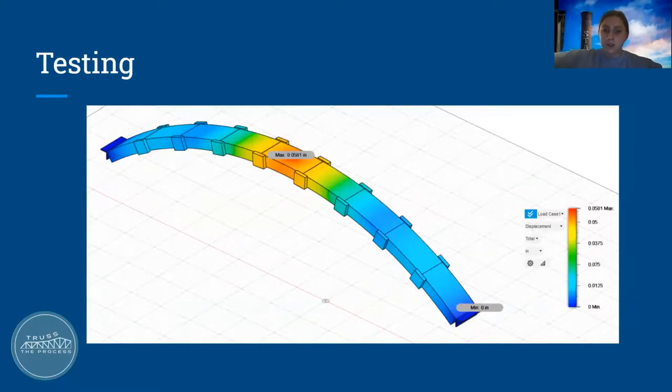This next photo shows the displacement that occurs when simulating the 60-pound load. The most displacement occurs at the location of the load in the middle of the bridge and displacement decreases as you go towards the ends of the bridge. The maximum displacement in the middle is by about 0.058 inches, which is just over 1/20th of an inch.